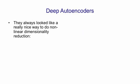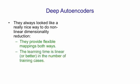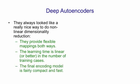Deep autoencoders always seemed like a really nice way to do dimensionality reduction, because it seemed like they should work much better than principal components analysis. They provide flexible mappings in both directions, and the mappings can be non-linear. Their learning time should be linear or better in the number of training cases, and after they've been learned, the encoding part of the network is fairly fast, because it's just a matrix multiply for each layer.